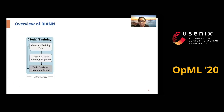We introduced RI-ANN to enable real-time incremental learning with approximate nearest neighbor on mobile devices. First, we generate training data and embedding data to train a statistical prediction model in the offline stage.